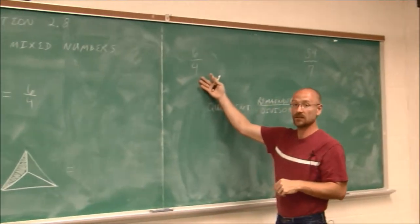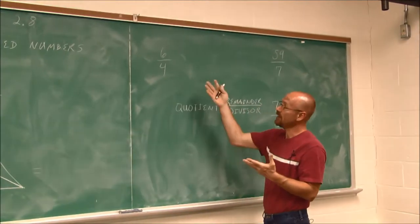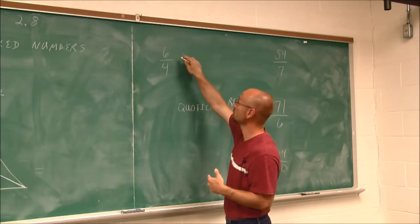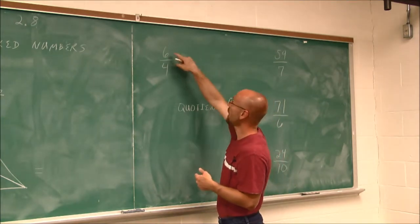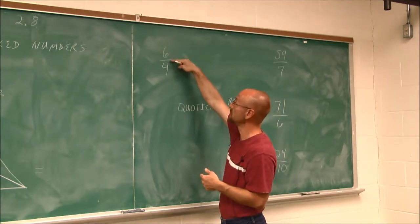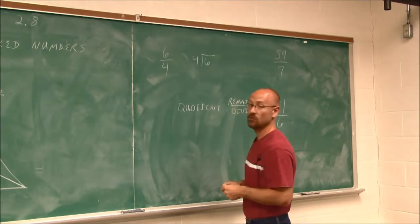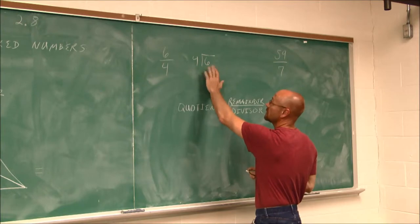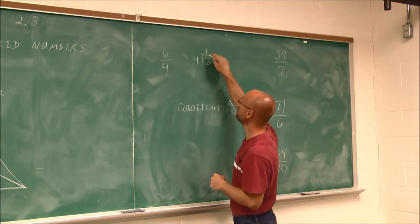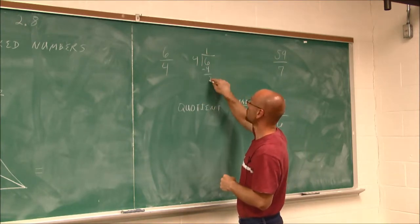And we're going to look at the 6 fourths. To write it as a mixed number, the first thing we want to do is actually do the division. We have the numerator of six being divided by four. So six is being divided by four. Well, four goes into six one time. And we do that subtraction and we get two.